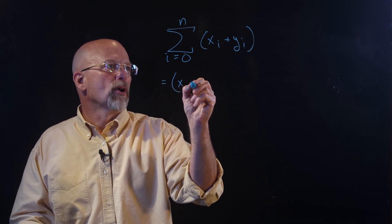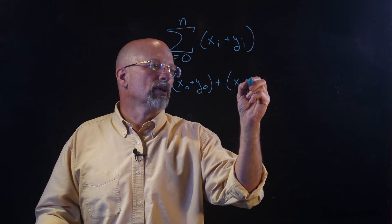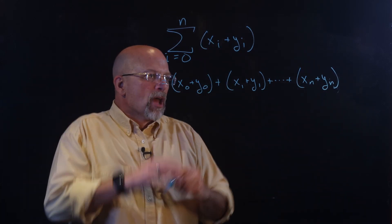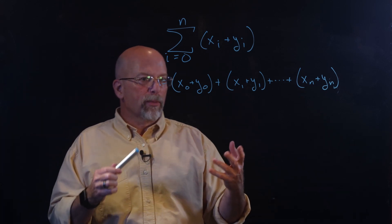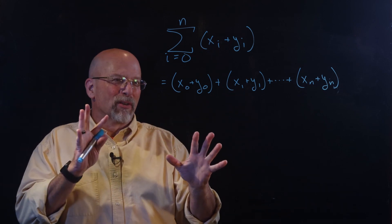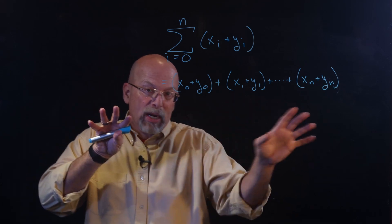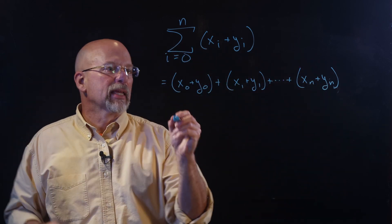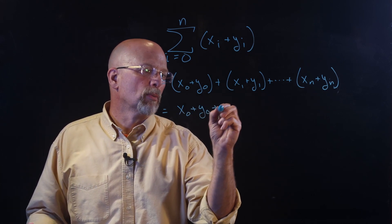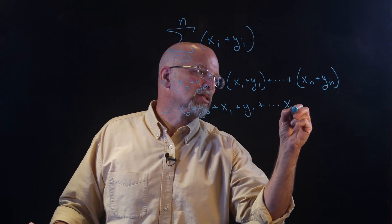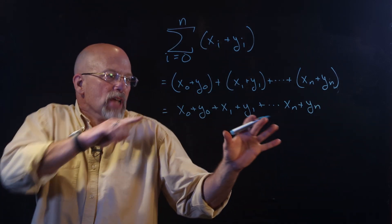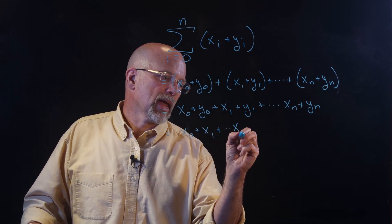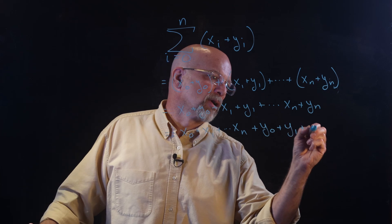Let's write this out. What I've got is x sub zero plus y sub zero plus x sub one plus y sub one plus all the way up to x sub n plus y sub n. Now we can use the commutative law — which says I can swap and rearrange things — and the associative law — which says I can regroup them. So I can rearrange to get x sub zero plus x sub one plus all the way up to x sub n, plus y sub zero plus y sub one plus all the way up to y sub n.